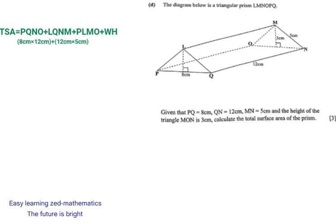Then plus rectangle PLMO, which is the rectangle on the left side. Remember, the same measurements apply here as on the right side — the length is 12 centimeters and the width is 5 centimeters, so I'm going to say 12 by 5. Then we write the area of the two triangles, which is base times height: the height is 3 and the base is 8, so 3 times 8.